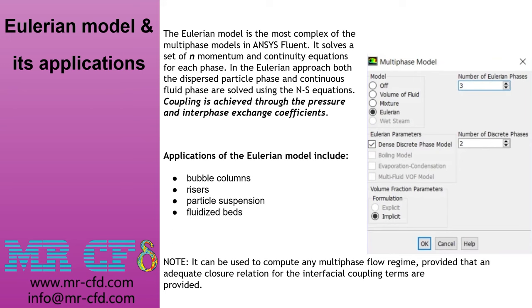After the VOF model, we have the Eulerian model, which is the most complex of the multiphase models in Ansys Fluent. It solves a set of n-momentum and continuity equations for each phase. In the Eulerian approach, both the dispersed particle phase and the continuous fluid phase are solved using the Navier-Stokes equations. Coupling is achieved through the pressure and interphase exchange of coefficients. The Eulerian model is the most comprehensive model and can almost cover any type of multiphase flow. Its applications include bubble columns, risers, particle suspension, and fluidized beds, provided that adequate closure relations for the interfacial coupling terms are provided.